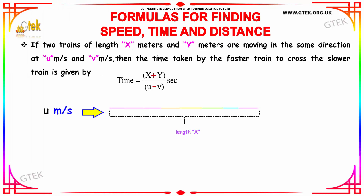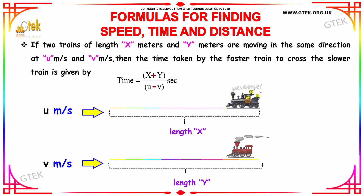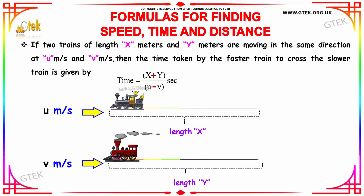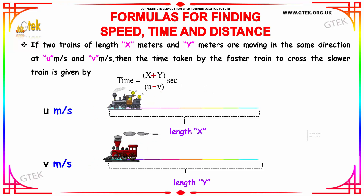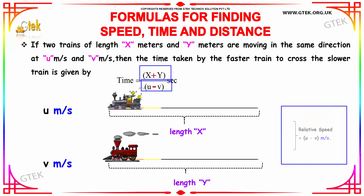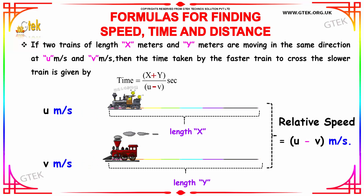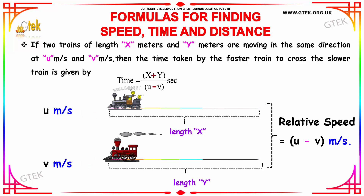If two trains of length x meters and y meters are moving in the same direction at u meters per second and v meters per second, then the time taken by the faster train to cross the slower train is given by x plus y divided by u minus v, which is the relative speed. Here x is the length of the first train, y is the length of the second train, u is the speed of the fast train, and v is the speed of the slow train.